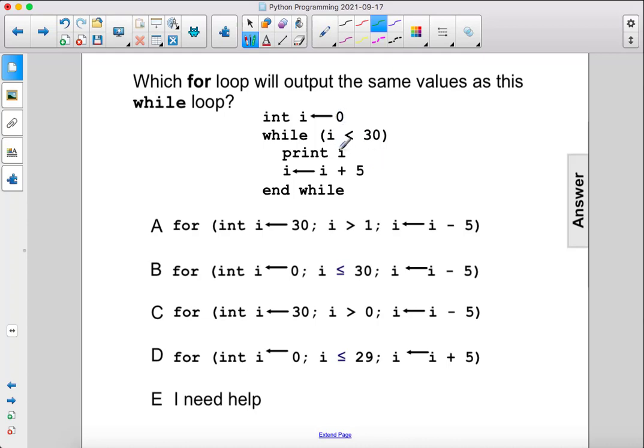So i is 0, we're going to print that, so it's going to print 0. Then i is going to be equal to 0 plus 5, which is 5. And it's going to go back, 5 is less than 30.